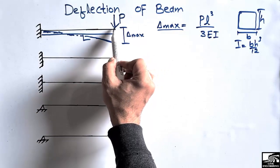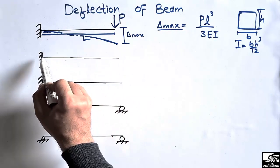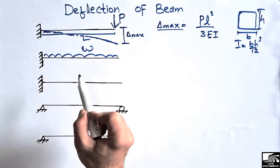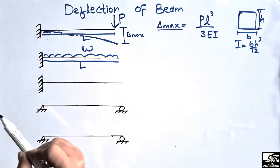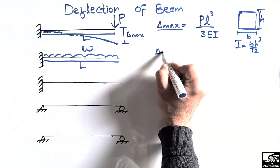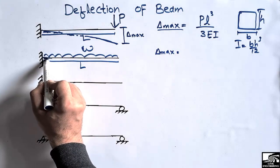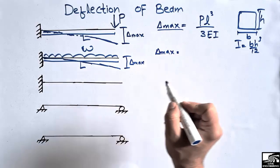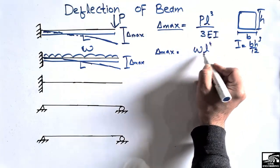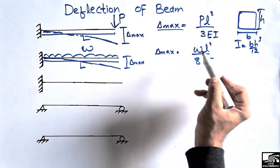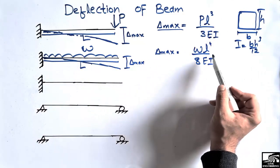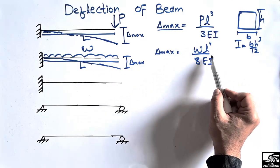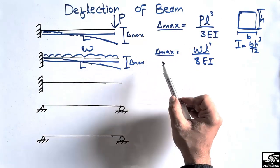Similarly, if there is a uniformly distributed load of magnitude w acting on the cantilever beam of length L, the beam will also show maximum deflection at the free end because there is no support there. The maximum deflection for this case is given by the formula: δ_max = wL⁴ / 8EI, where w is the uniformly distributed load, L is the length, 8 is the factor, and EI represents the elastic and geometric properties of the beam.